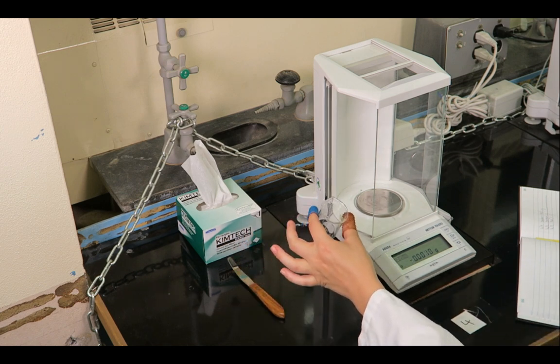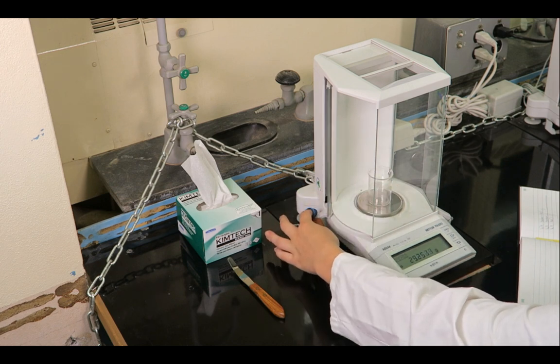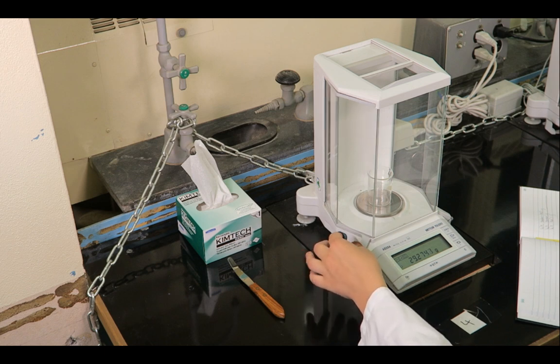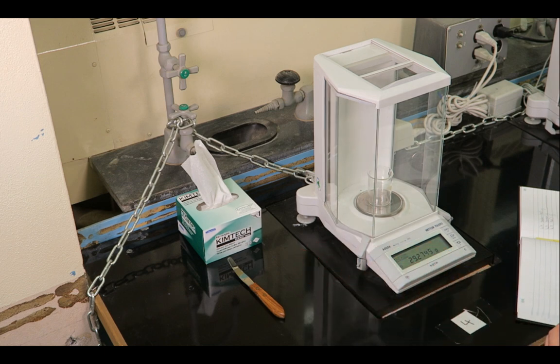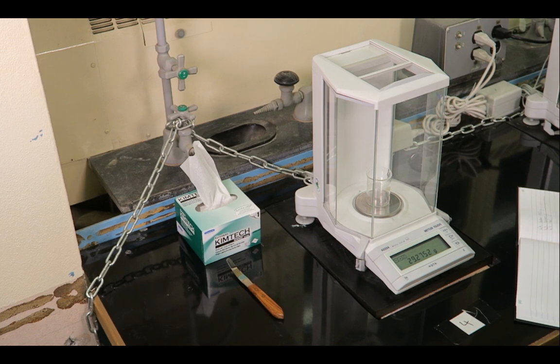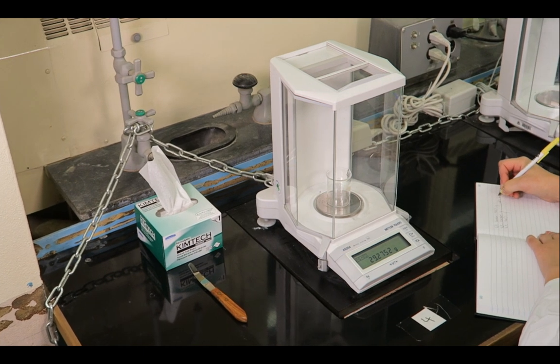Place the beaker into the center of the balance pan. Gently close the balance doors. Wait for a stable reading. Once a stable reading is achieved, record the mass of the beaker in your laboratory notebook.